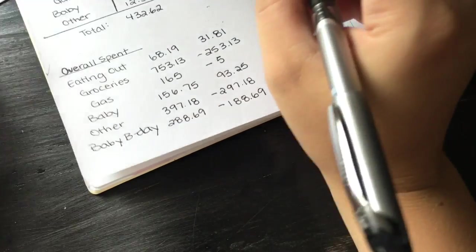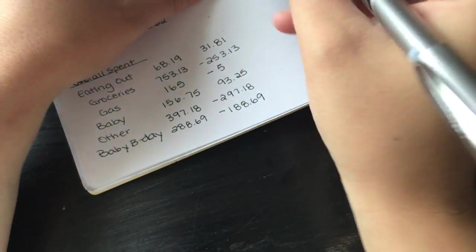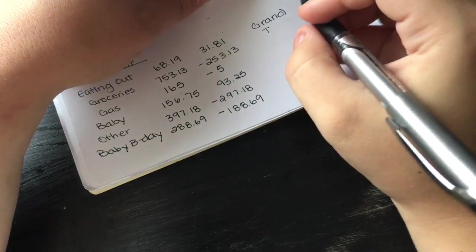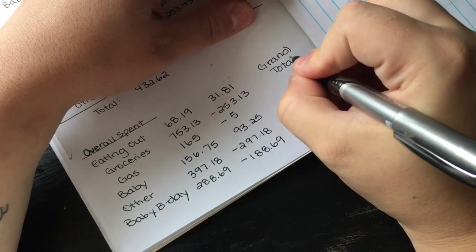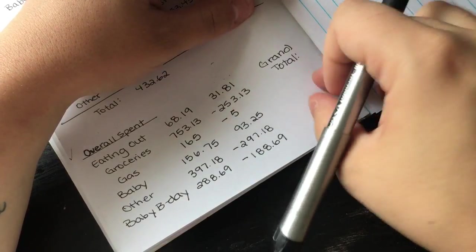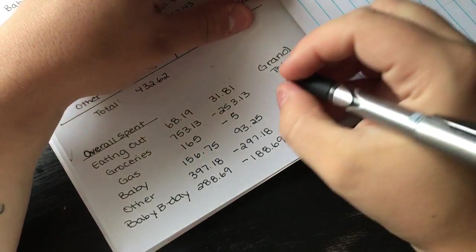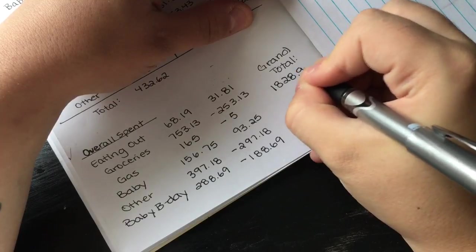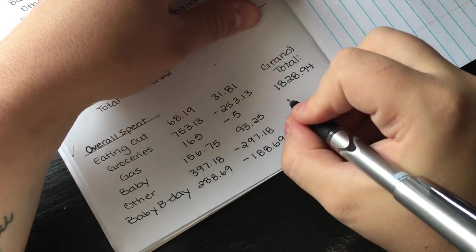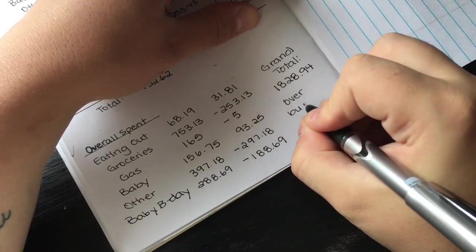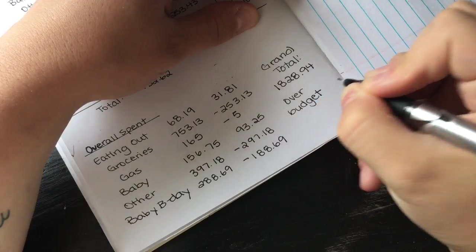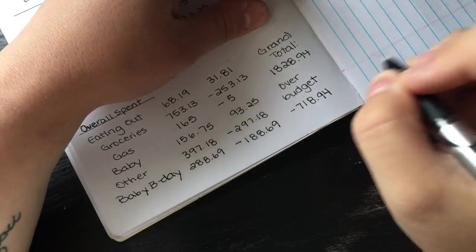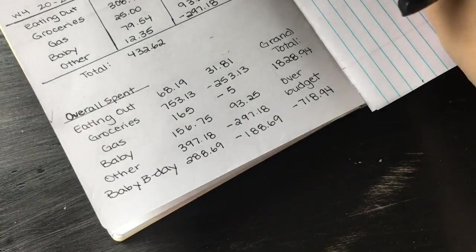That was crazy. We had a grand total, sorry my writing is so off when it comes to being very close to the edge. We spent $1,828.94 on expenses this month, so we were over budget by $718.94. That is awesome, makes me feel great.